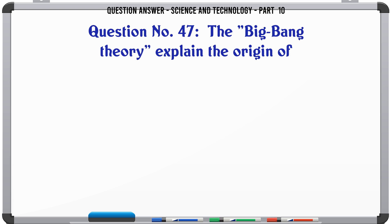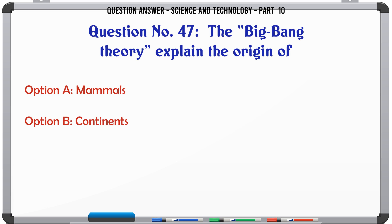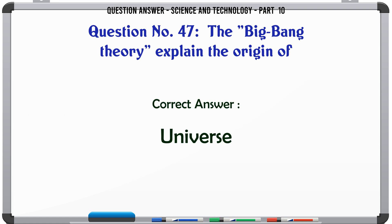The Big Bang Theory explains the origin of. A. Mammals. B. Continents. C. Universe. D. Ocean. The correct answer is Universe.